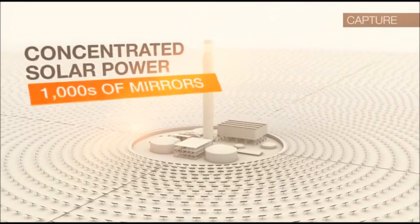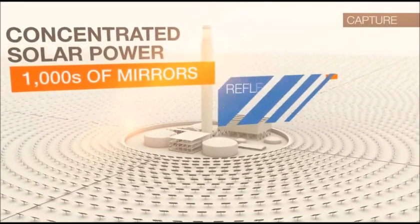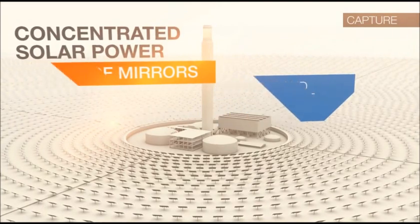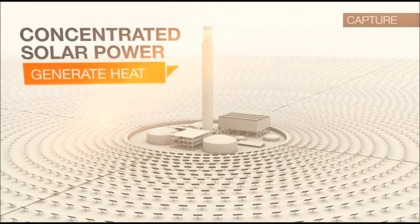Concentrated solar power uses thousands of mirrors to reflect and concentrate sunlight onto a central point to generate heat, which in turn is used to generate electricity.